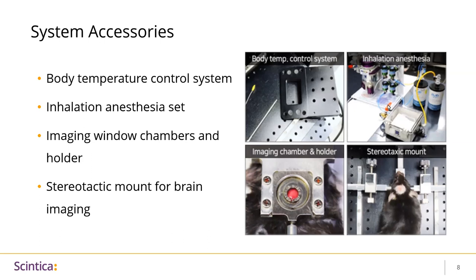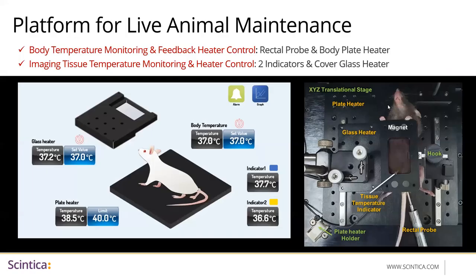This is an example of a thoracic window chamber model, and on the left we have a stereotactic mount for brain imaging to stabilize the head. The animal maintenance platform has a plate heater that can maintain body temperature; it is connected to a rectal probe which sends feedback to the system and the temperature is automatically adjusted. If you need to move an organ slightly out of the body for imaging, there is a tissue temperature heater with an integrated glass coverslip that contacts the tissue and automatically controls and maintains the temperature.